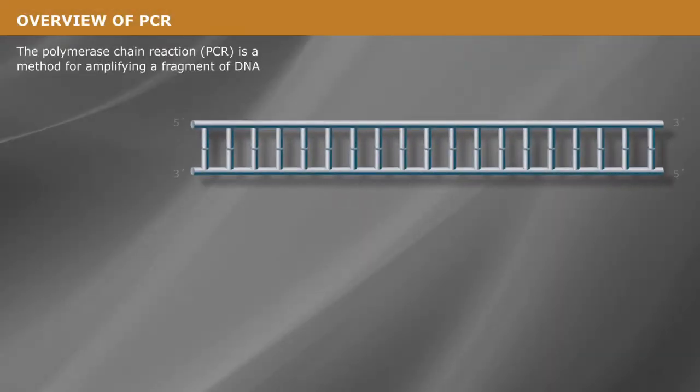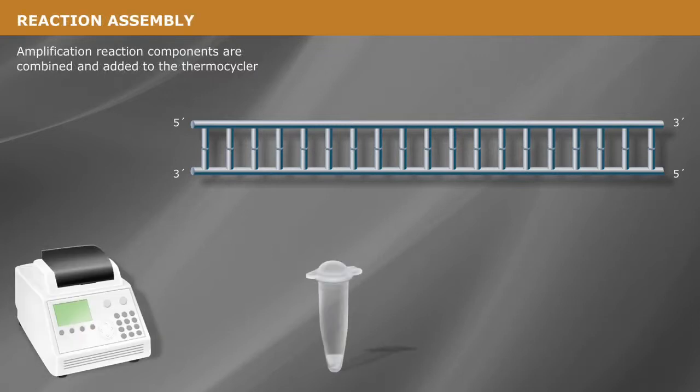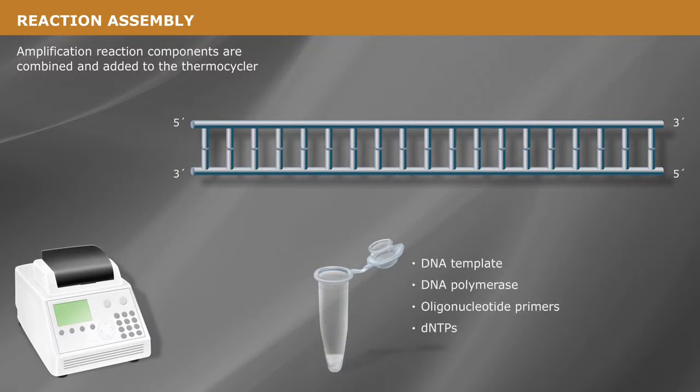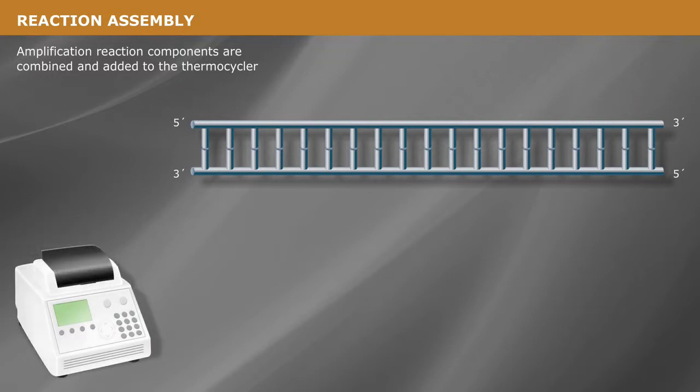The polymerase chain reaction, or PCR, is a method for amplifying a fragment of DNA. To begin, the DNA template of interest is mixed with the DNA polymerase, oligonucleotide primers, DNTPs, and an appropriate reaction buffer. This reaction is placed into a thermocycler that is pre-programmed to modulate the temperature during PCR.